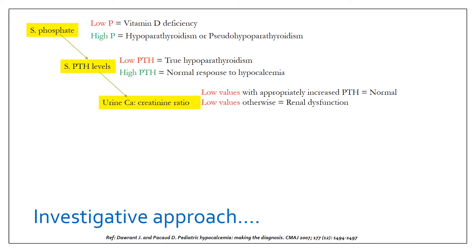Then urine calcium creatinine ratio: if the values are low with appropriately increased parathormone levels, then it suggests the normal physiological or bodily response to hypocalcemia. Low value of urine calcium creatinine ratio otherwise would suggest a renal dysfunction.